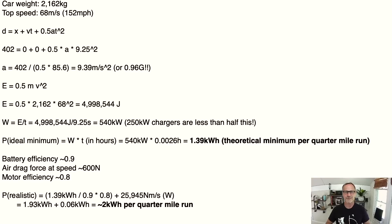But anyway let's talk about the energies involved. So energy is E = ½mv². So we have 0.5 times our mass which is 2162 kilograms times our maximum velocity of 68 meters per second squared and we end up with almost five megajoules. We can just take this number of joules, divide it by 9.25 seconds and we end up with approximately 540 kilowatts. So remember that the fastest chargers for Tesla at least out there right now are 250 kilowatt chargers. So they're less than half the amount of energy that these batteries are outputting for 10 seconds to do the quarter mile run.